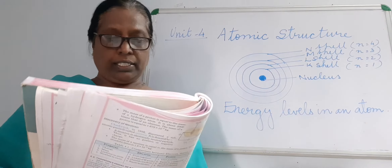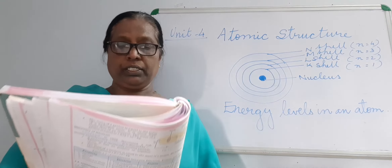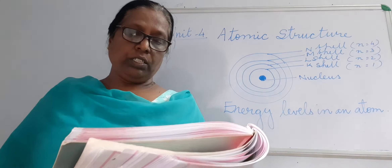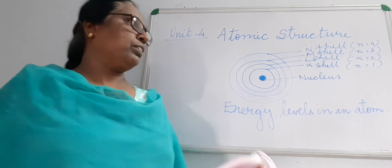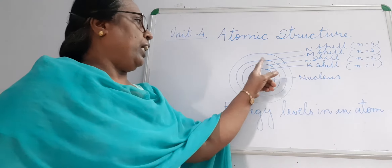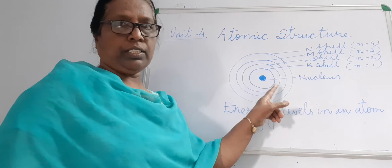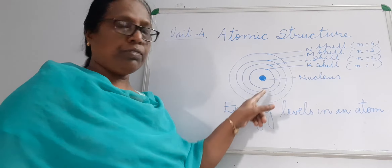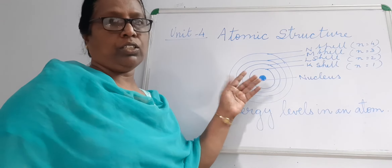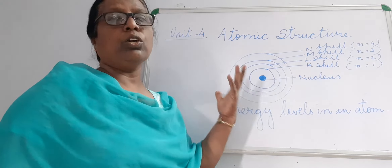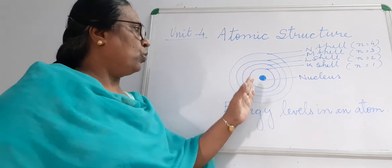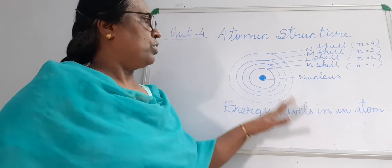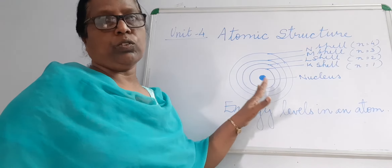Third point: so long as electrons revolve in a particular orbit, it neither emits nor absorbs energy. Therefore, the orbits are also called energy levels. The electrons revolve around the nucleus in their own orbits. When revolving, an electron does not absorb energy or lose energy. That is why it is called the energy level of an atom. Each orbit has its own energy level.